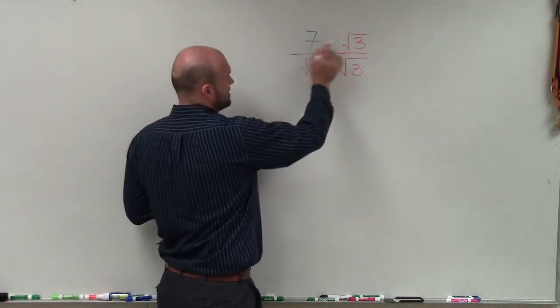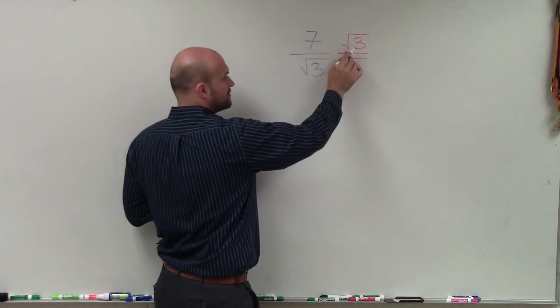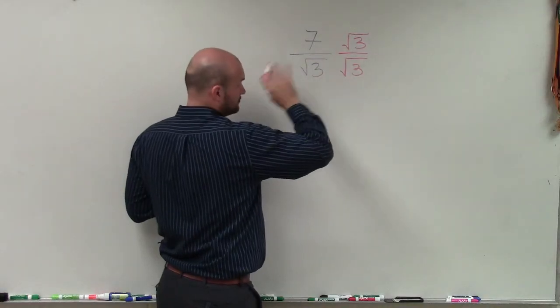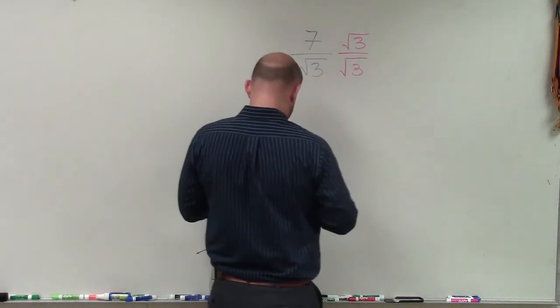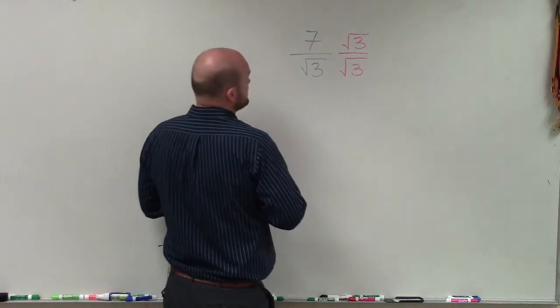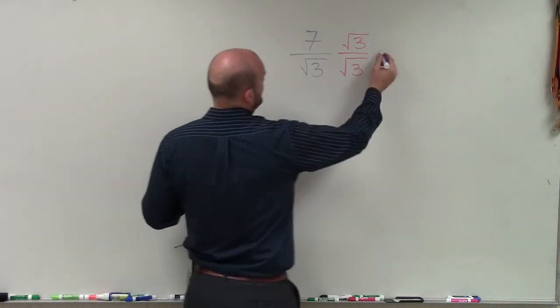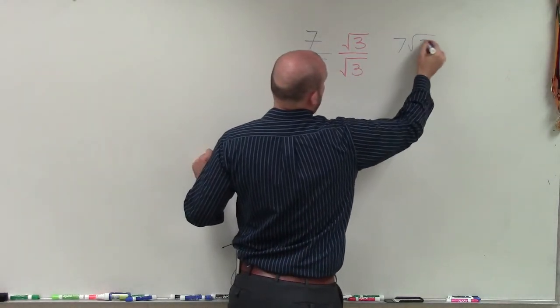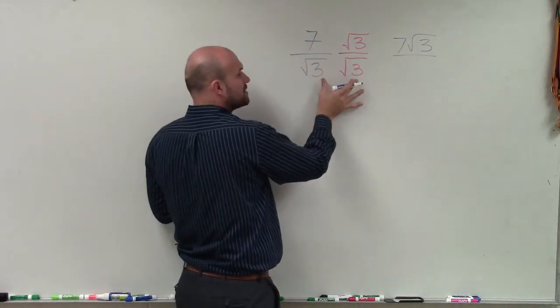So now as I multiply across, 7 times square root of 3 is just going to be 7 square root of 3. And then what I have here is square root of 3 times square root of 3.